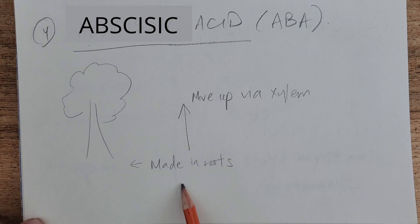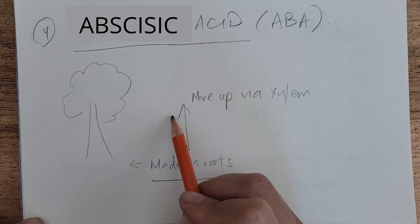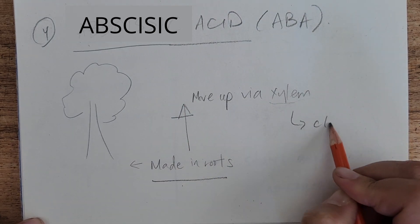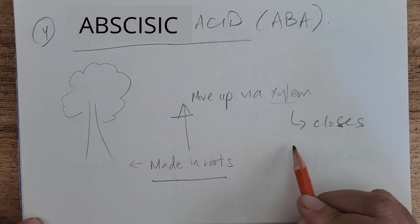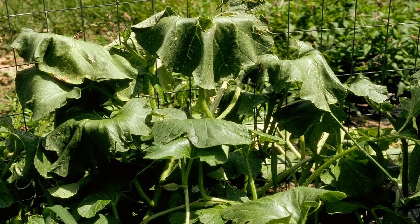Also, under stressful conditions, roots will produce abscisic acid. It's put into the xylem and once transported up to the leaves, it closes the stomata and helps the plant avoid water loss.